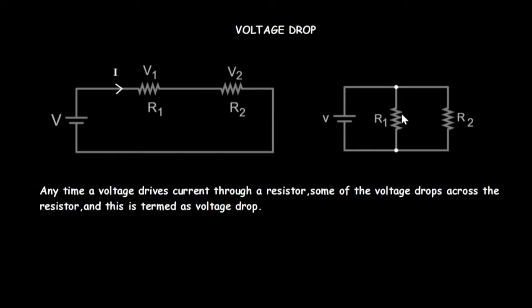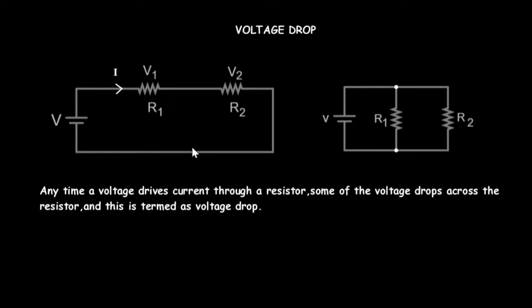For a parallel connection of resistors, that wouldn't be the case. When you have resistors connected in parallel, the voltage from the source will be the same as the voltage drop across each resistor. So if I have 5 volts from the source, the voltage across R1 will be 5 volts and the voltage across R2 will also be 5 volts. That wouldn't be the case for a series connection.